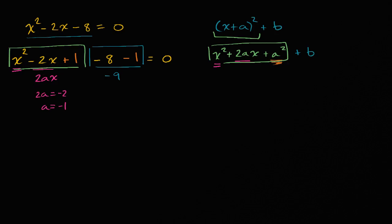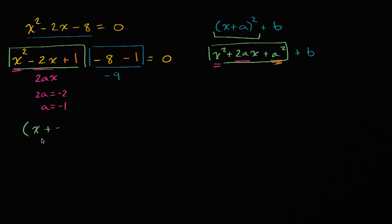We can rewrite this as: what I squared off in green is x plus A squared, which we write as x plus negative 1 — or just x minus 1 — squared, and then we have minus 9, equals zero.